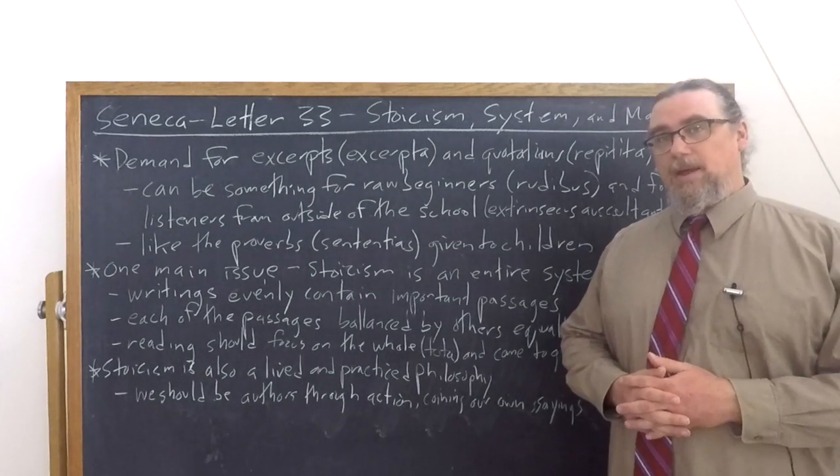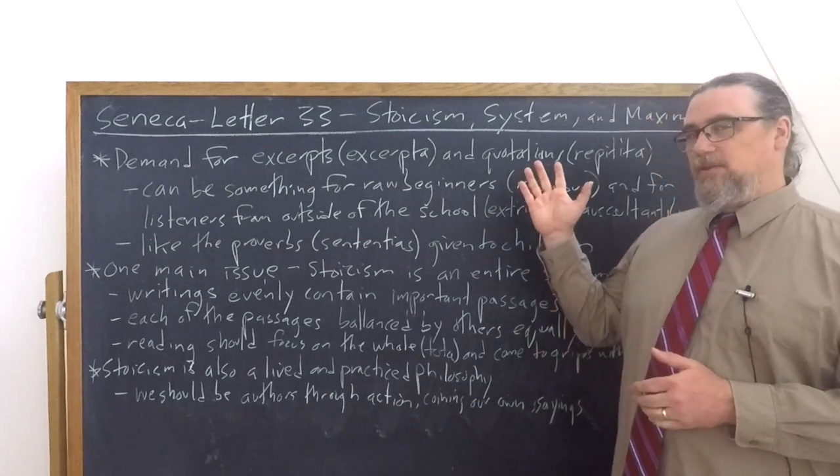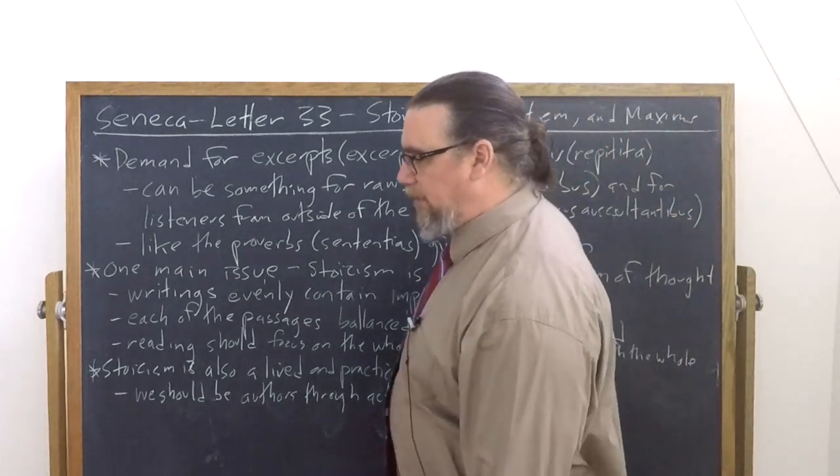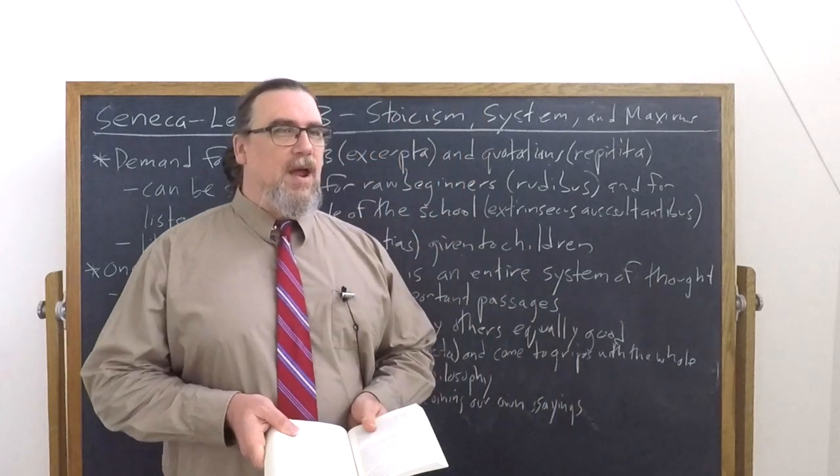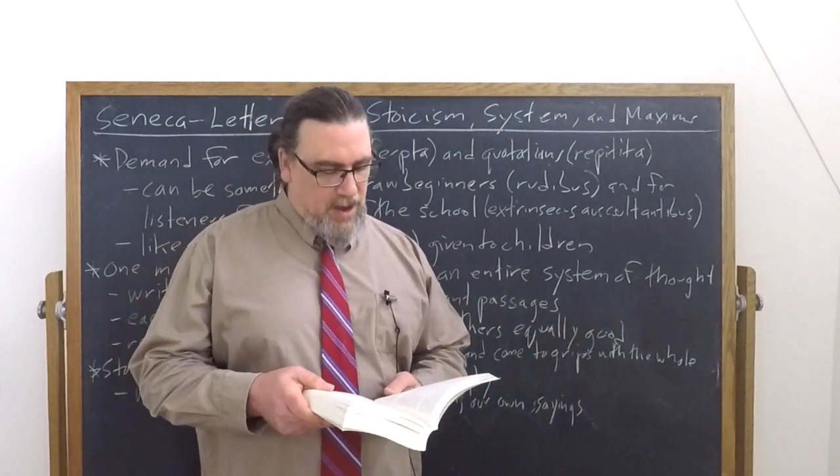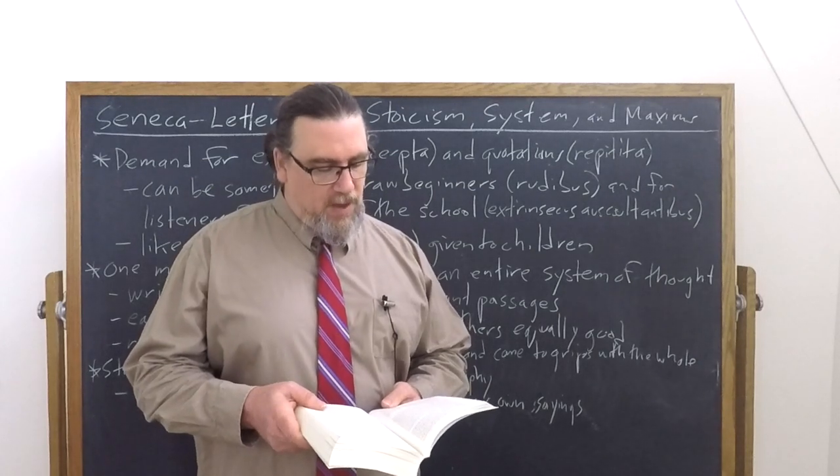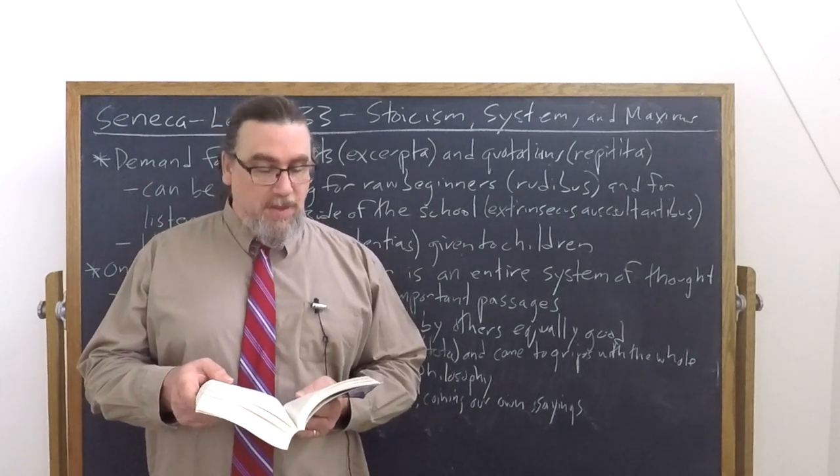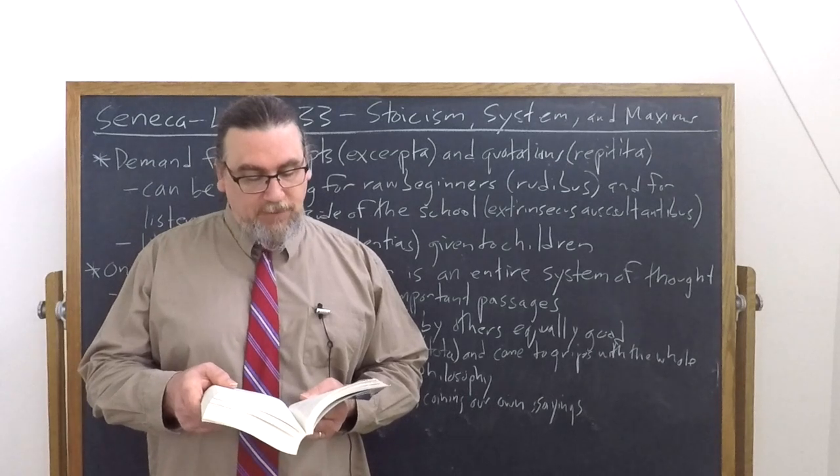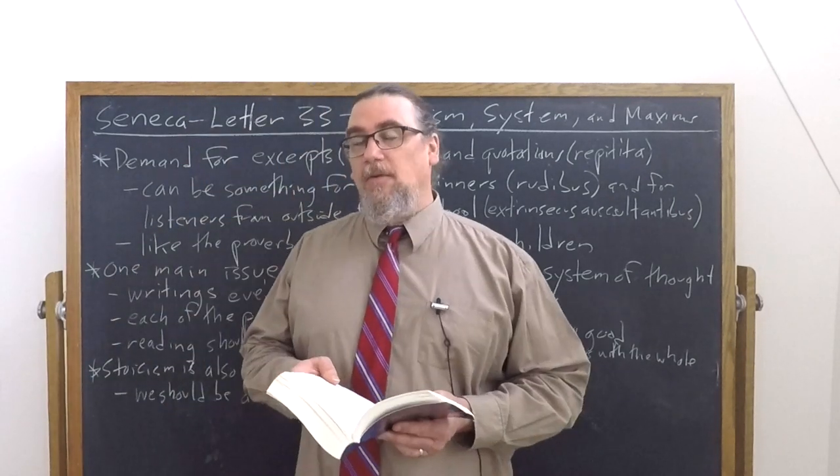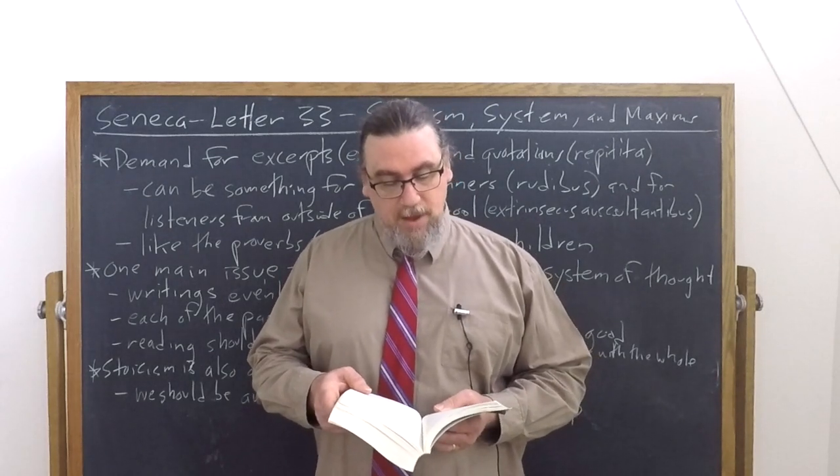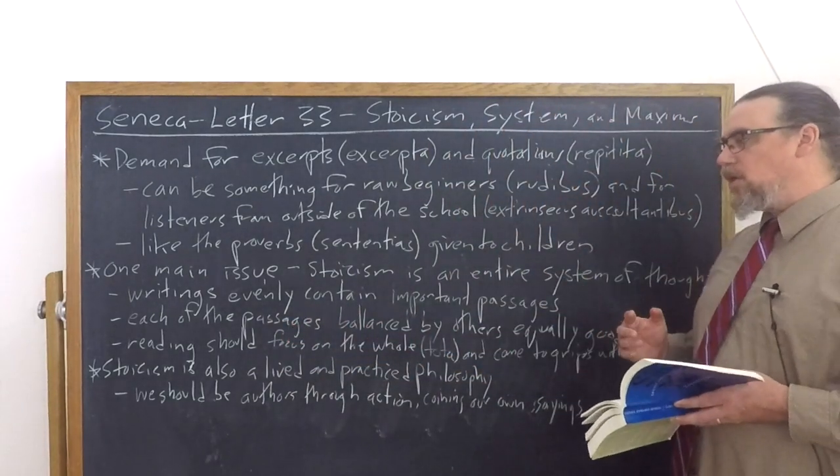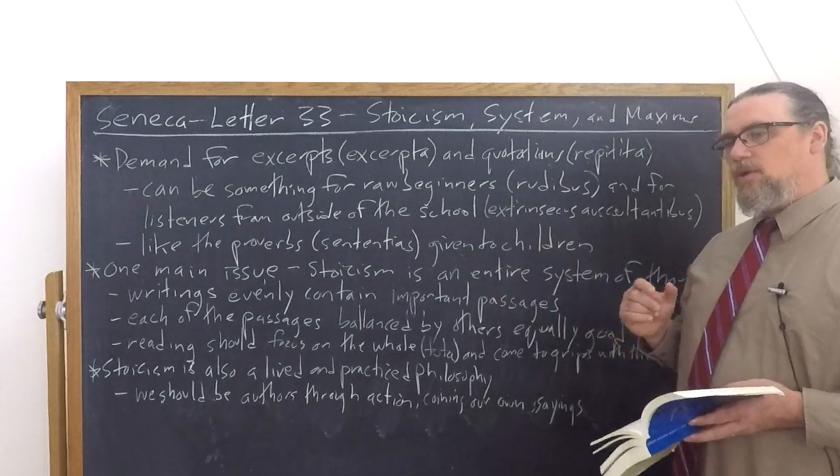Then he stresses another thing about reading. And this is what takes us away from being beginners or being people outside of the system who don't really understand it. He says that the subject matter is treated along the lines that are proper to it. And an intellectual product is devised from which nothing can be removed without a collapse. When you're reading works of great people, you must read them as wholes, come to grips with them as wholes. Tota is the word that he's using there. The totality of it.